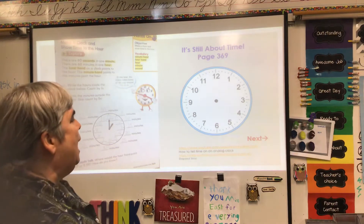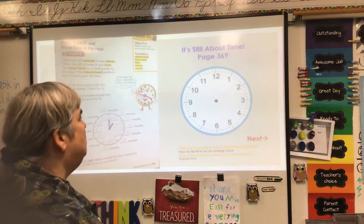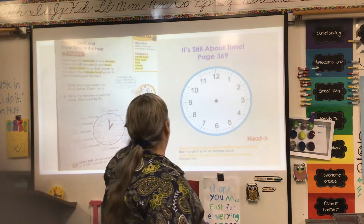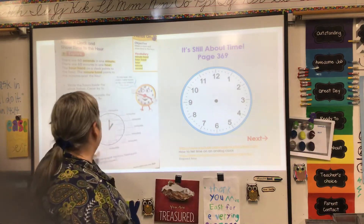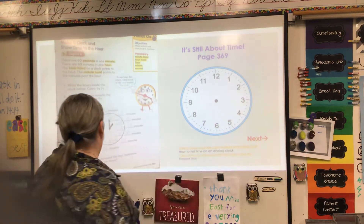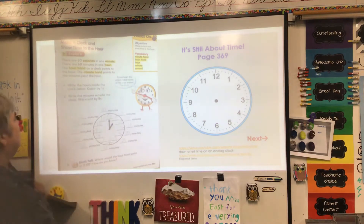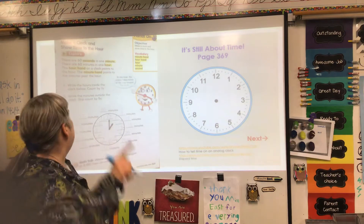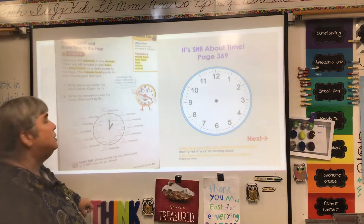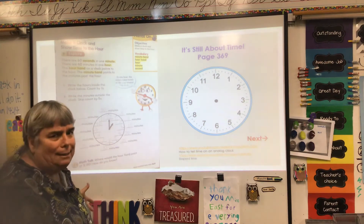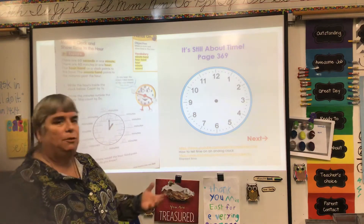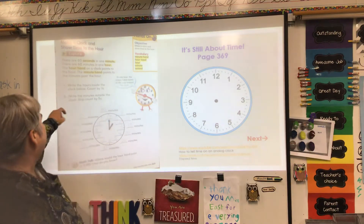So here's our first clock, and I wanted to do this one without the hands, because we're going to talk about how each one of these stands for a set of five. To me, when I look at this, it just looks kind of crowded and confusing. We're on page 369. There are 60 seconds in one minute. There are 60 minutes in one hour. The hour hand on a clock points to the hour. The minute hand points to the minutes past the hour — or the minutes before the hour, depending on how you look at it.